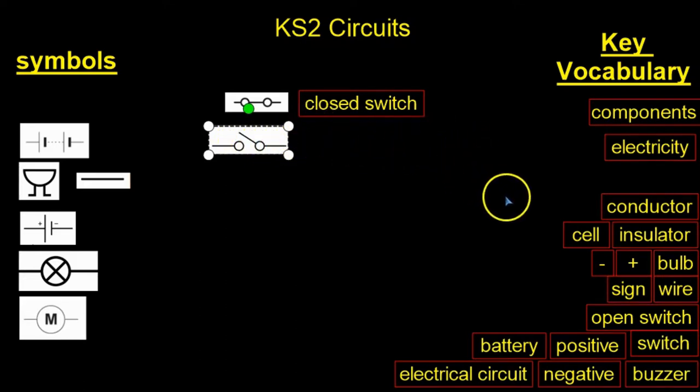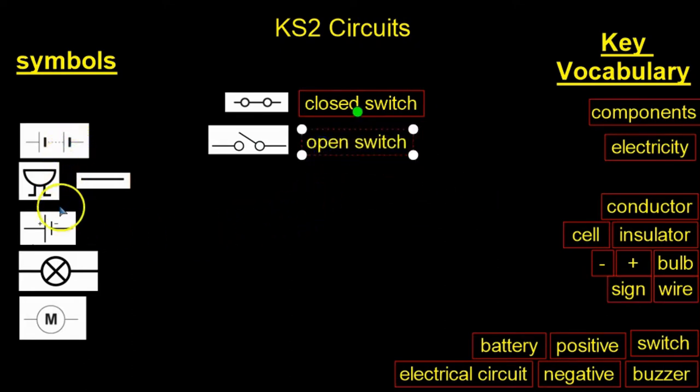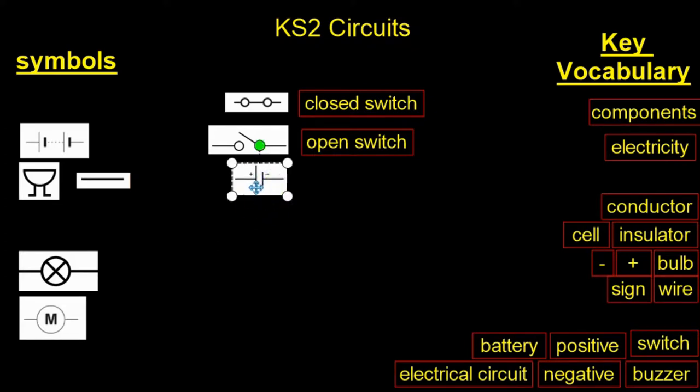This is called an open switch. We have this symbol here—this is a cell, and you can see the positive and negative signs on that symbol. It might be too small for you to see in the video, but there's a positive symbol here and a negative symbol here. This is the word cell.